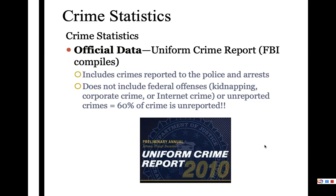There are two major sources of statistics on crime. One is official data that comes from something called the Uniform Crime Report. They used to be published in paper, and now you can find them all online through a .gov address. If you like to geek out about statistics, you can play around with searching those databases — not required, just interesting that it's available. What the UCR, or the Uniform Crime Report, tracks is crimes reported to the police and arrests.